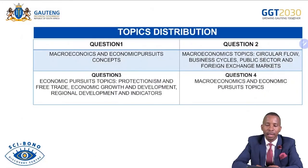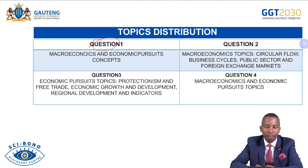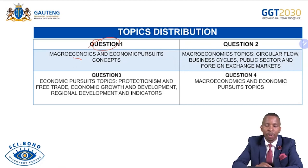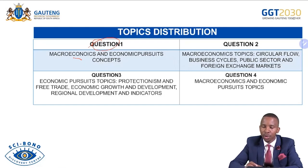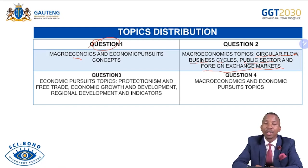This slide is about topic distribution across Paper 1 content. Question 1 is Section A — it combines both macroeconomics and economic pursuits topics. Question 2 consists of the circular flow, business cycles, public sector, and foreign exchange markets. These are the topics you need to master to answer Question 2.